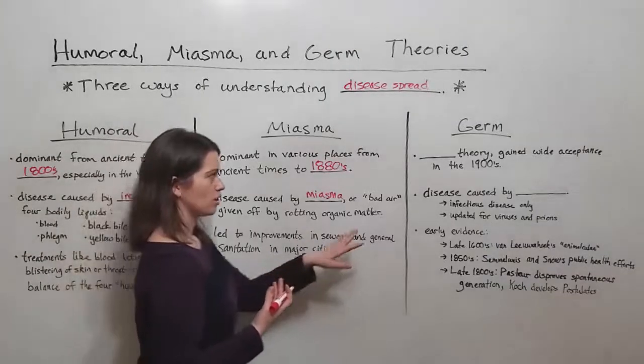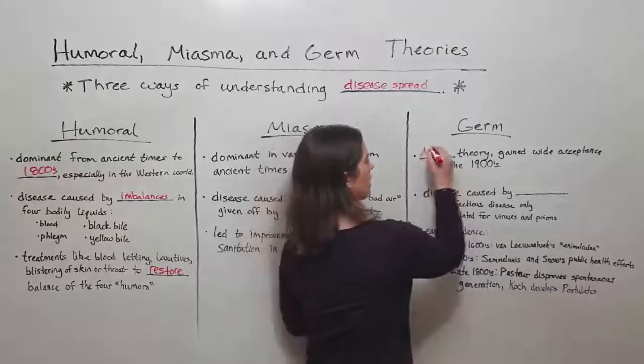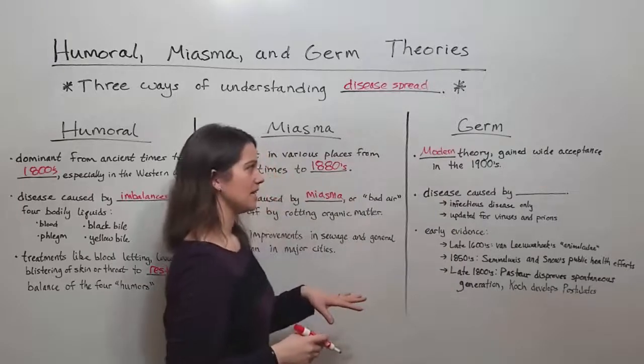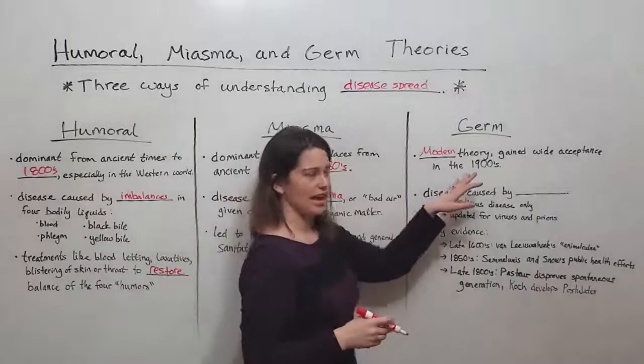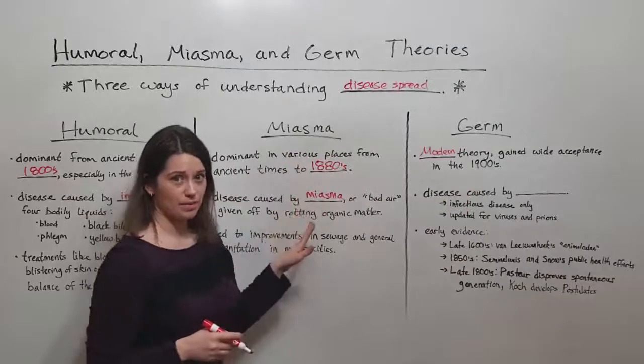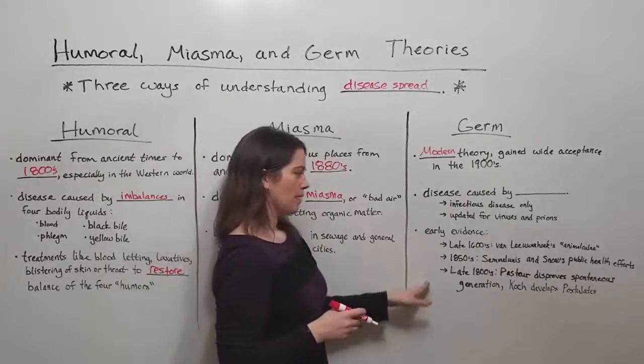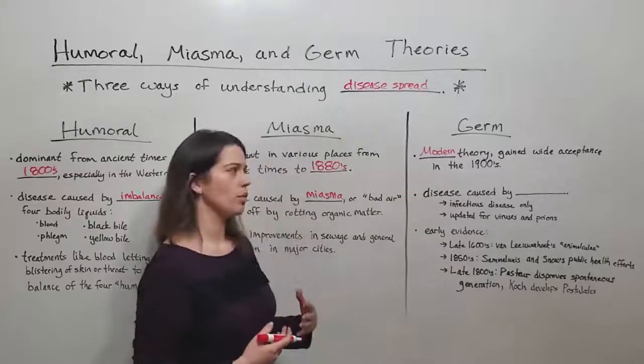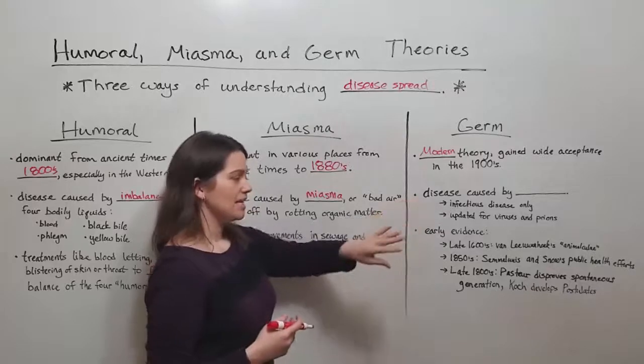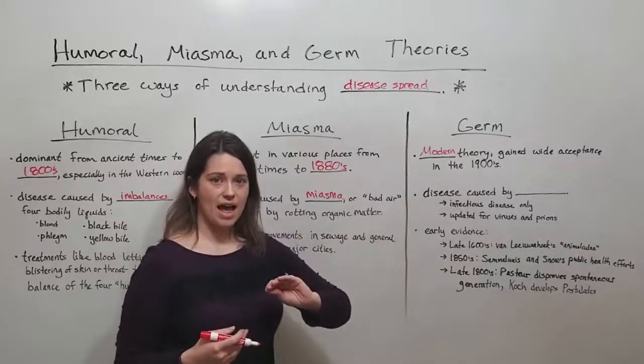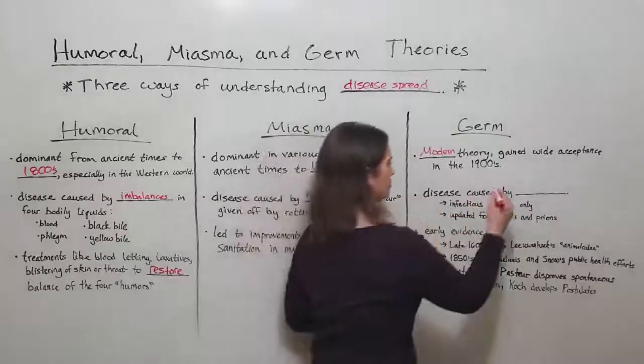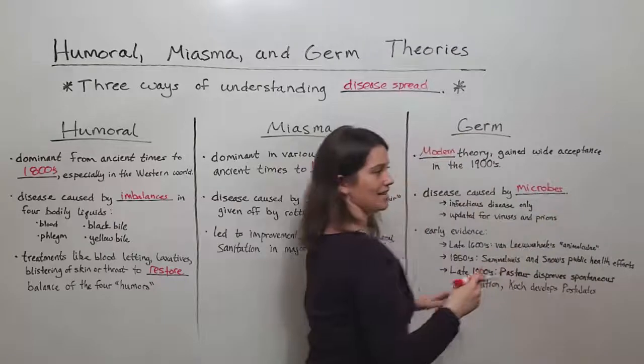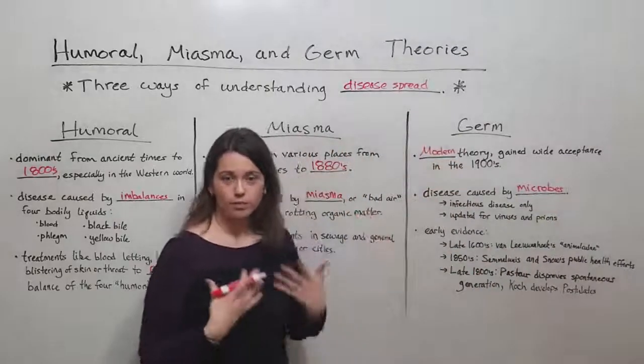Now let's move on to talking about germ theory. Germ theory is basically the modern understanding of disease. It gained wide acceptance in the 1900s after miasma theory was debunked. Although, as we'll talk about in a minute, there was early evidence that predated the 1900s that was still in support of germ theory. Germ theory says that disease is caused by microorganisms or microbes. Hence the name germ.